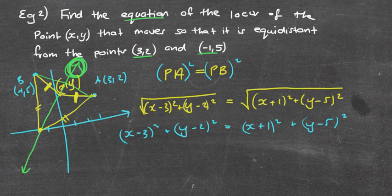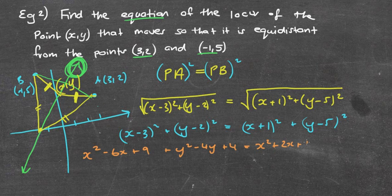Now I expand the brackets: x² - 6x + 9 + y² - 4y + 4 equals x² + 2x + 1 + y² - 10y + 25.